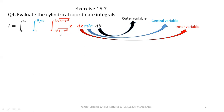The limits of Z are from minus square root of (4 minus R squared) to 3 times the square root of (4 minus R squared). The limits of R are from 0 to theta over pi, and the limits of theta are from 0 to pi.